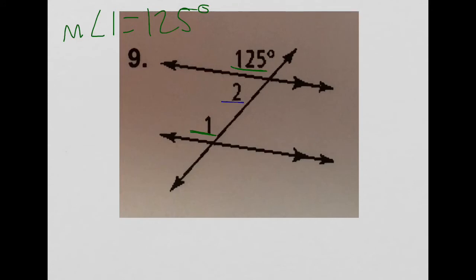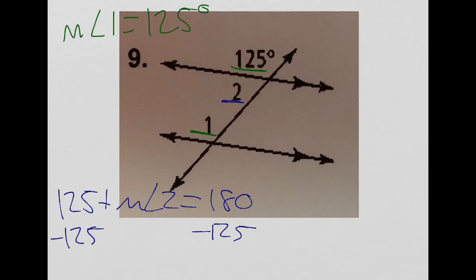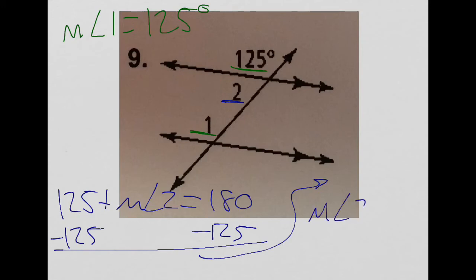To find angle 2, angle 1 and angle 2 are same-side interior angles — they are on the same side of the transversal — so they are supplementary. Measure of angle 1 plus measure of angle 2 equals 180. Since measure of angle 1 is 125, the equation becomes 125 plus measure of angle 2 equals 180. Subtracting 125 from both sides gives measure of angle 2 equals 55 degrees.